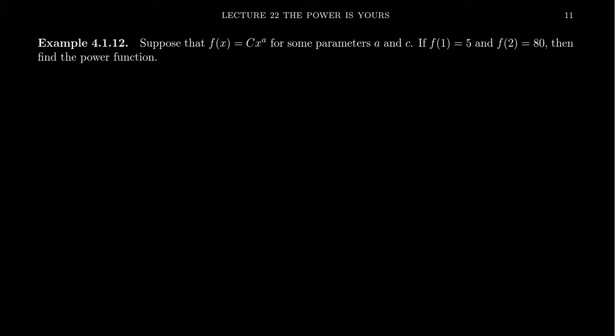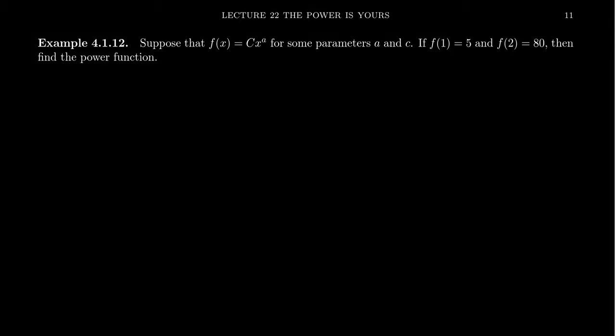It'll just be a generic power function f of x equals c times x to the a. We have to determine the parameters a and c such that the function passes through f of 1 equals 5 and f of 2 equals 80.